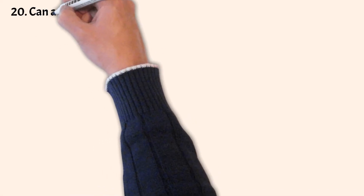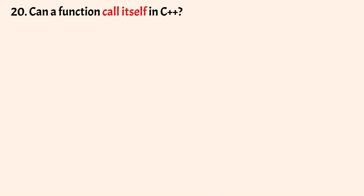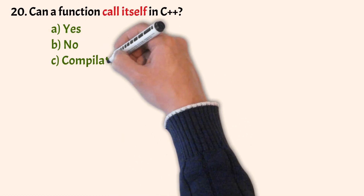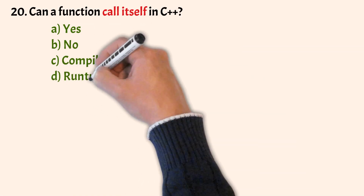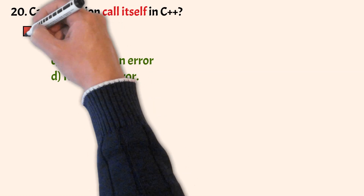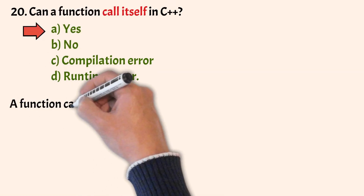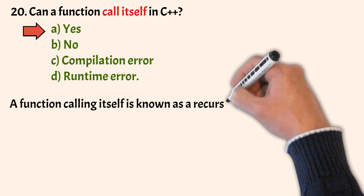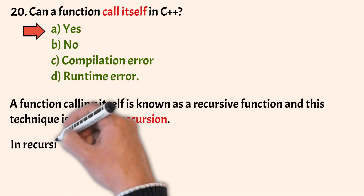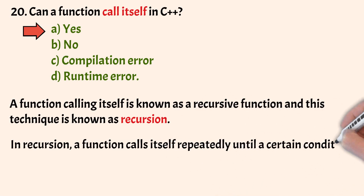Can a function call itself in C++? The options are yes, no, compilation error and runtime error. The correct answer is option A, yes. A function calling itself is known as a recursive function and this technique is known as recursion. In recursion, a function calls itself repeatedly until a certain condition is met.